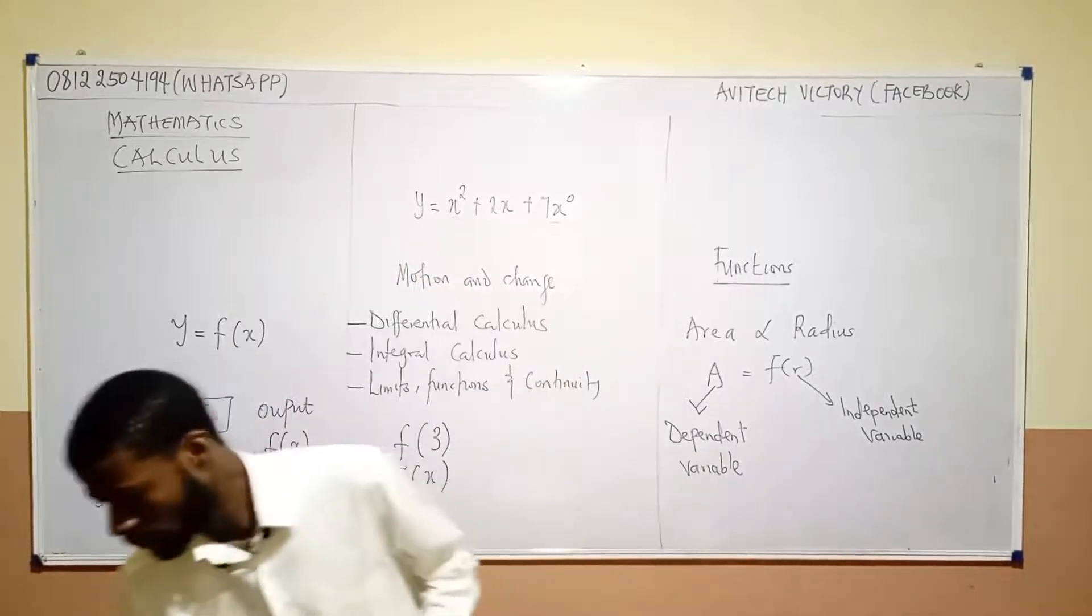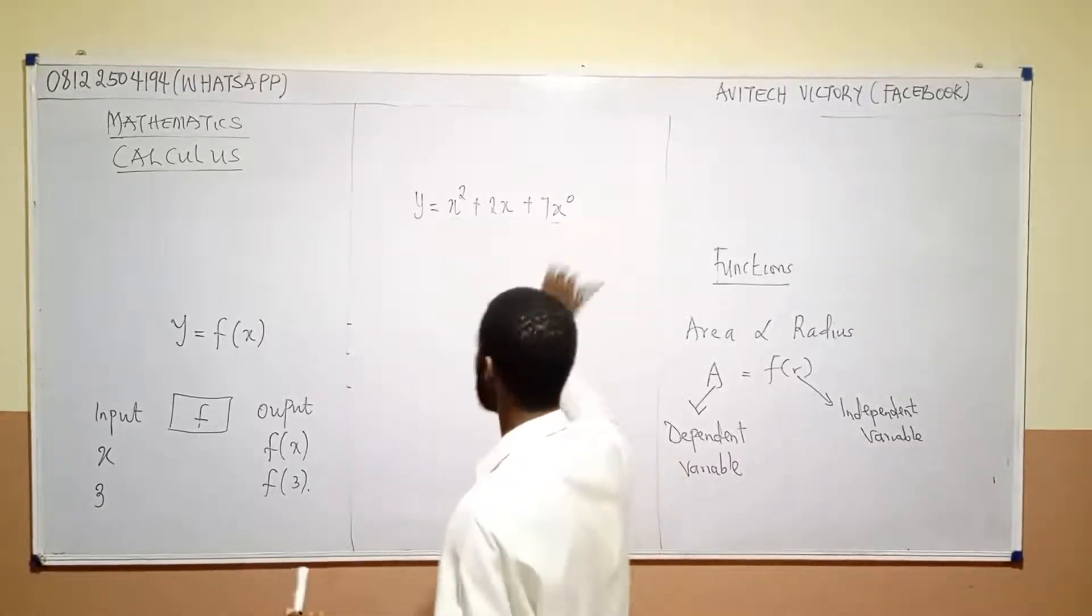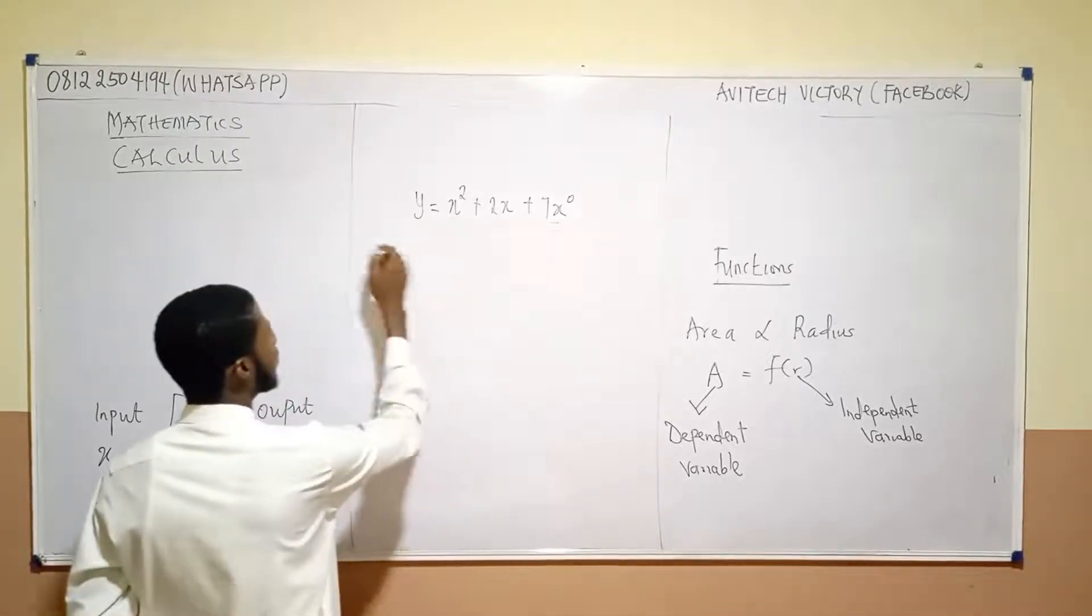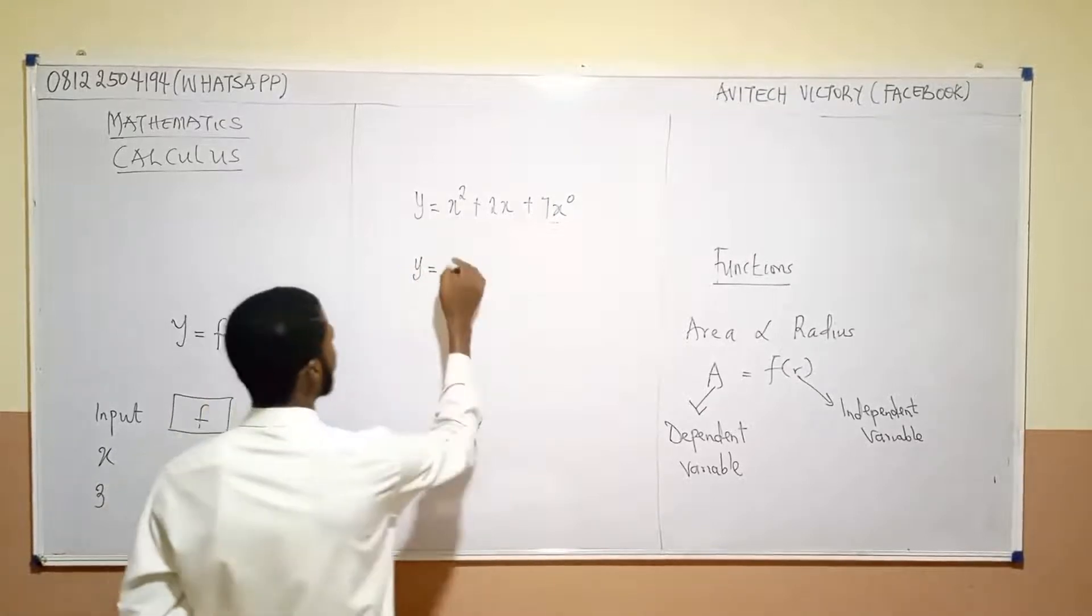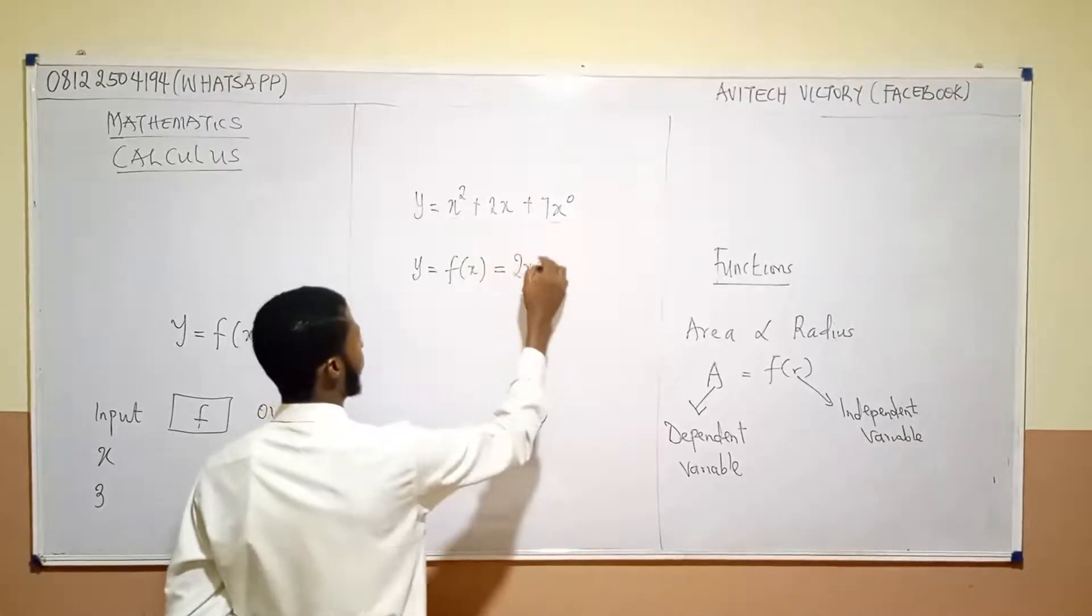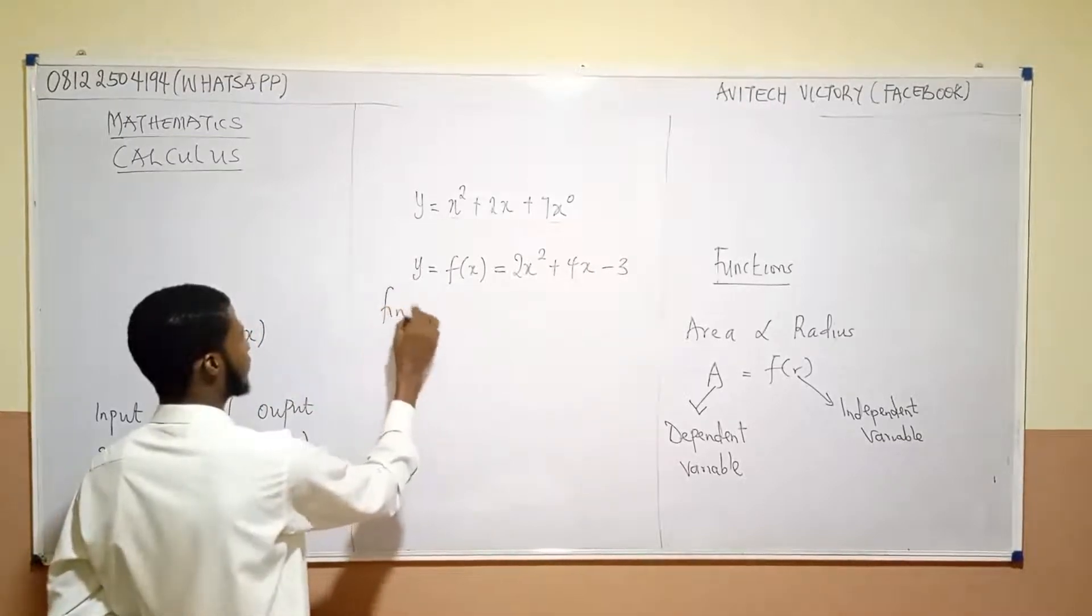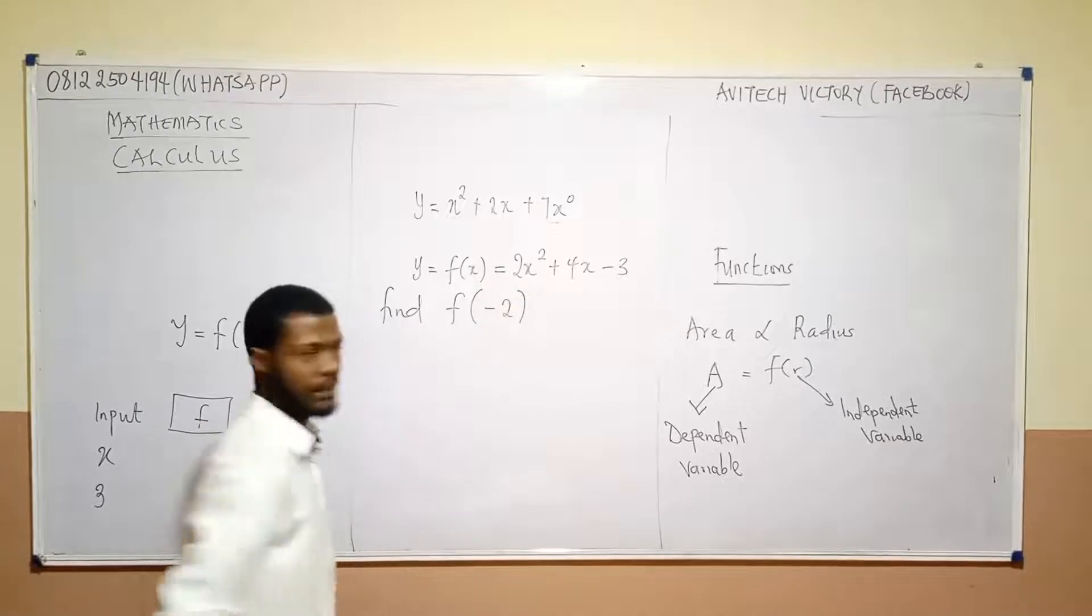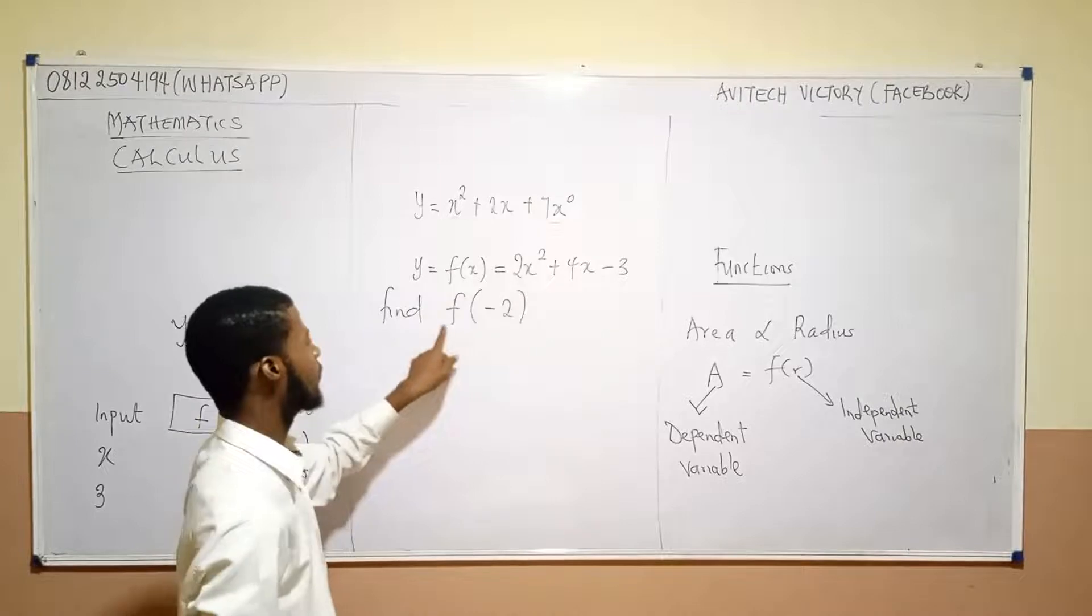So, let me take a question on this. It could just look like a polynomial question. Let us say, y is equal f of x, which is equal 2x squared plus 4x minus 3. Then, we are asked to find f of minus 2. Imagine a question like this. y is equal f of x, which is equal to this. We are asked to find f of minus 2.